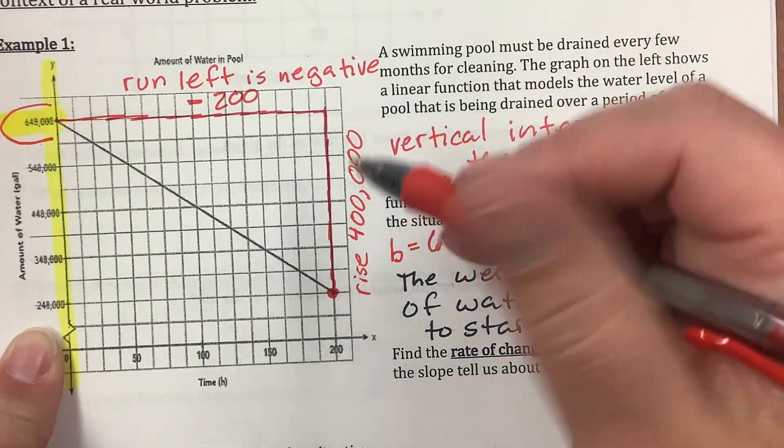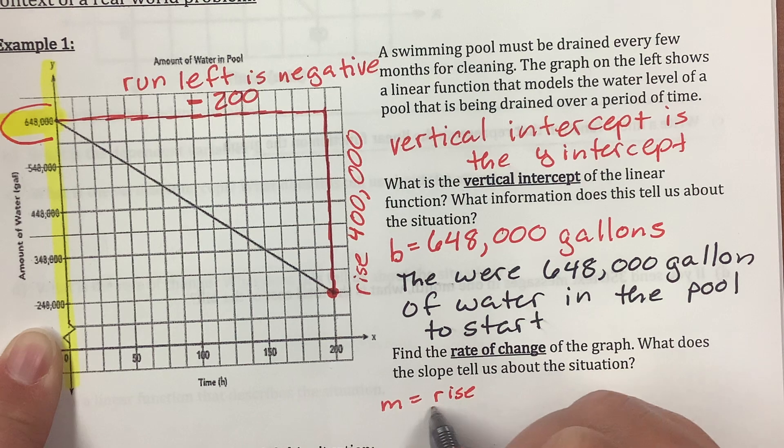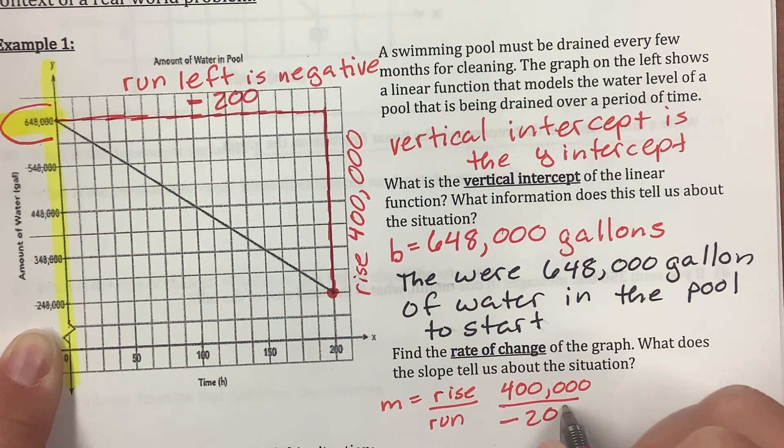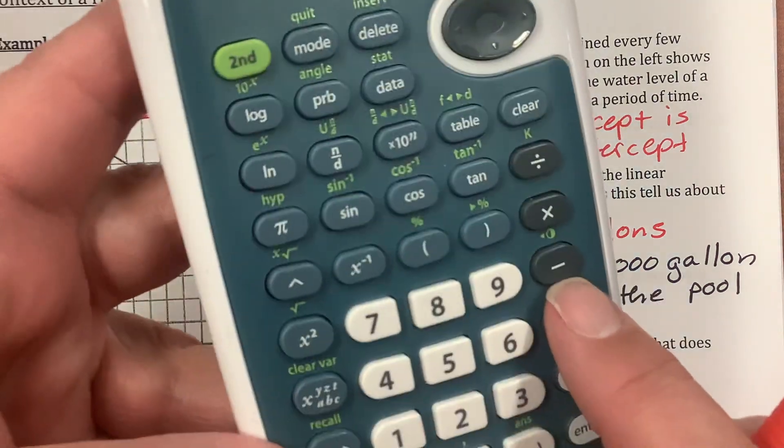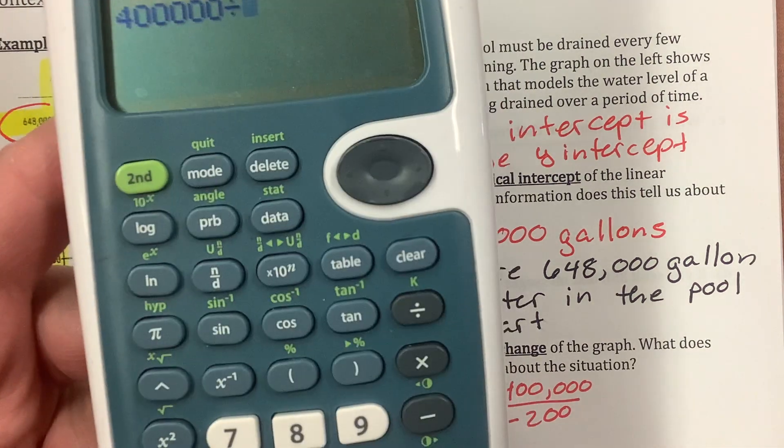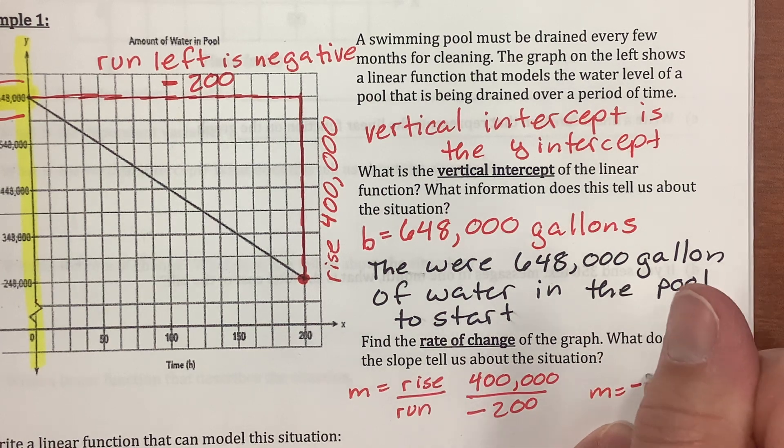So, for me, rise over run is 400,000 over negative 200. So, m equals rise over run, which is 400,000 over negative 200. So, I'm just going to divide this by negative 200. I used the minus sign for my negative sign. You can't do that. 400,000 divided by negative 200. m equals negative 2,000.